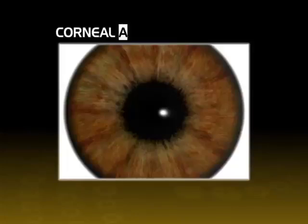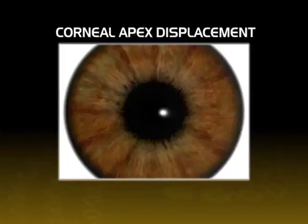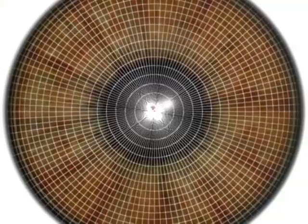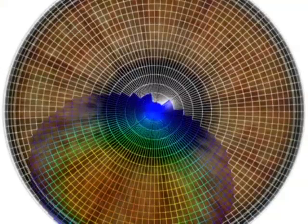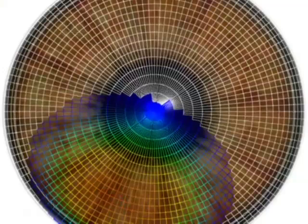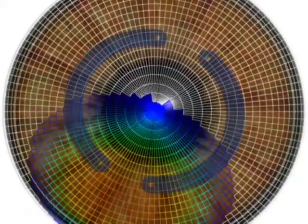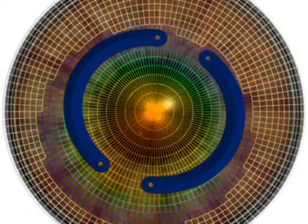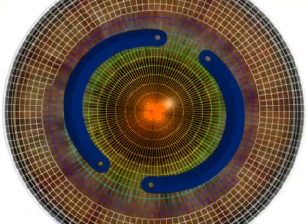Corneal apex displacement: In keratoconus patients, the corneal apex is usually decentered in relation to the central pupil. Cararing implantation displaces the corneal apex toward the center, improving corneal optics and visual acuity.